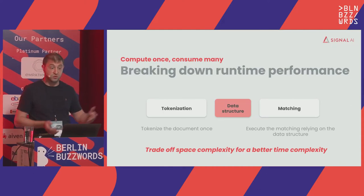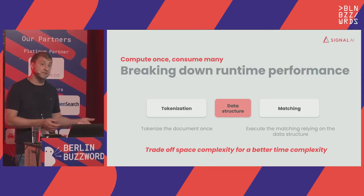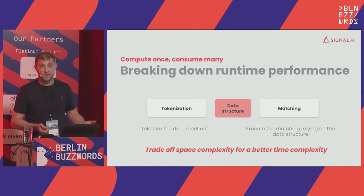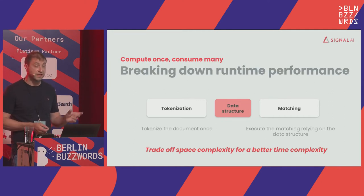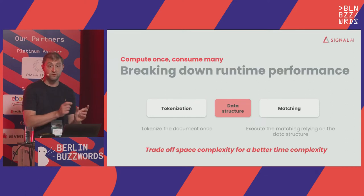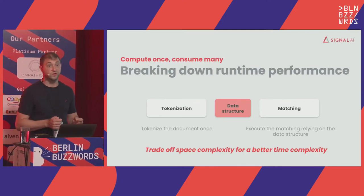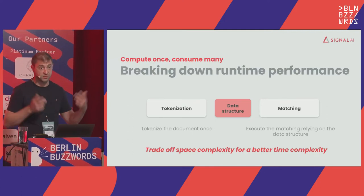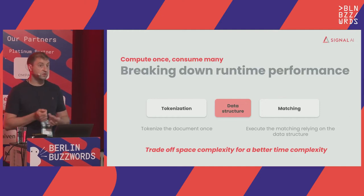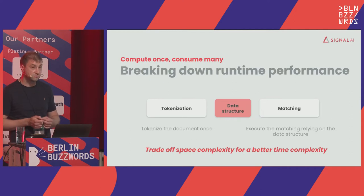The most naive solution that comes to mind is to introduce a map — tokenize simply, store everything into a map, and then use that for fast lookup. But that is naive, because the problem we have is not just finding single terms. If your alias is composed of multiple tokens, you either save all possible combinations into the map — which is not a good space complexity trade-off — or you have to store extra information like offsets or positions somewhere else.